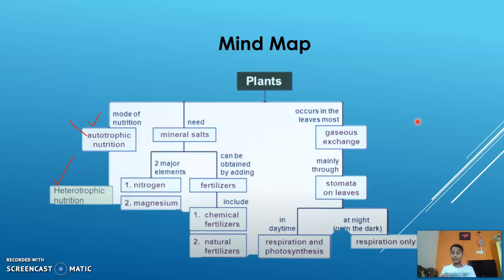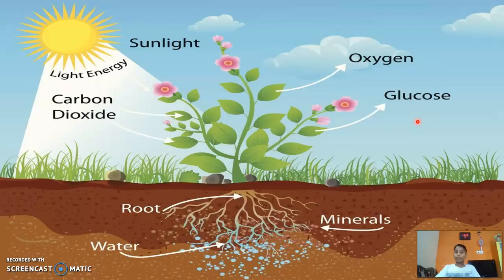Respiration happens both in day and night — the plant takes in oxygen and gives out carbon dioxide. Photosynthesis, on the other hand, happens only during the day, when the plant takes in carbon dioxide and gives out oxygen.